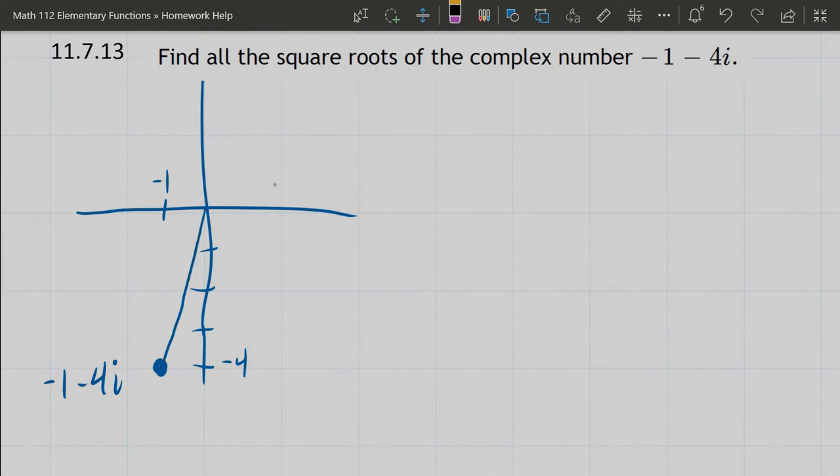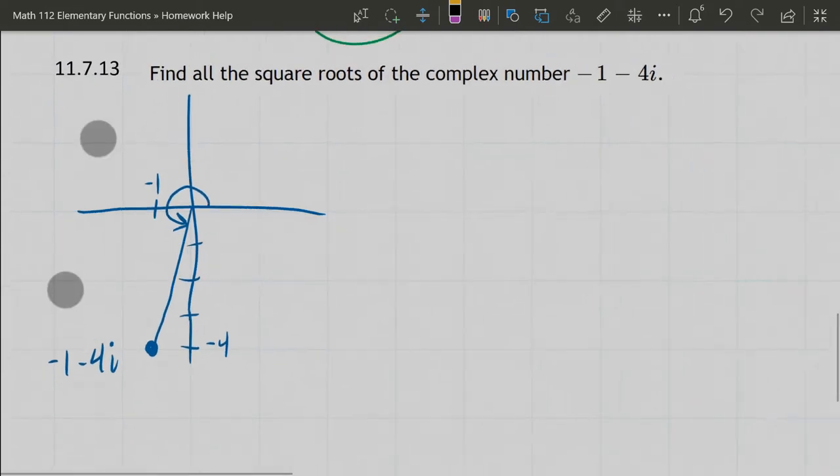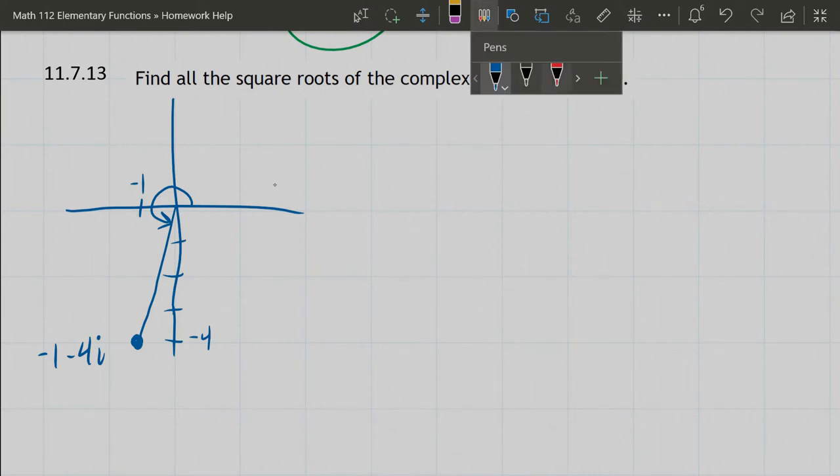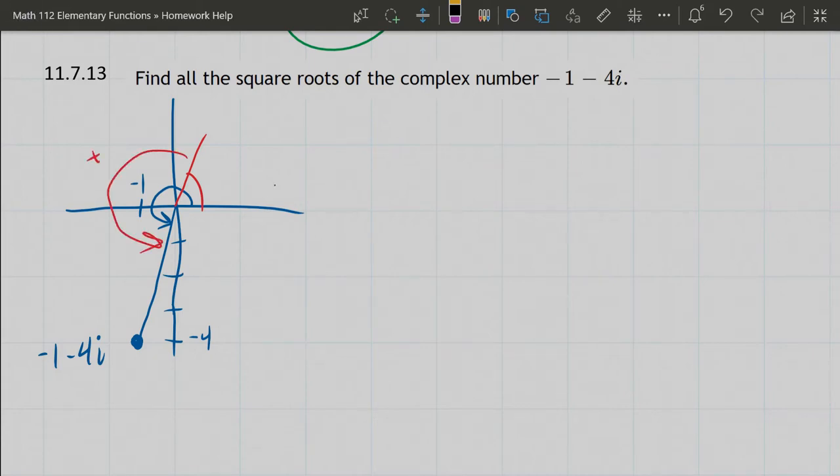We're going to get the radius and then we're going to get the angle right here. I can already tell the angle is going to be bigger than π/2. That means when we do the tangent inverse, what we're actually going to get is this angle right here, and we're going to have to add π to it to get the extra half rotation.